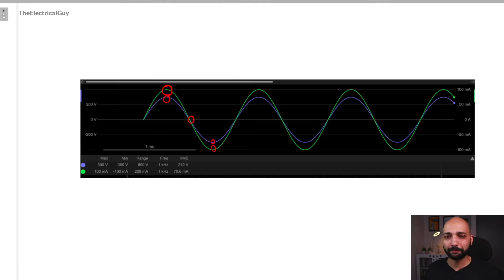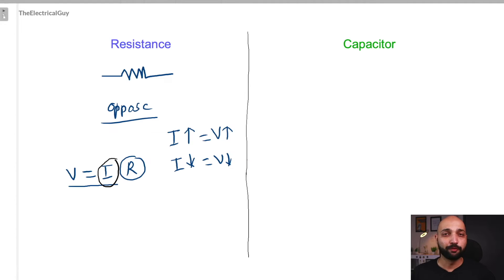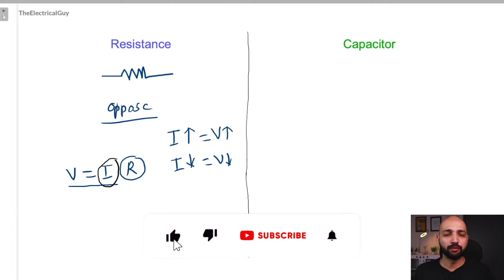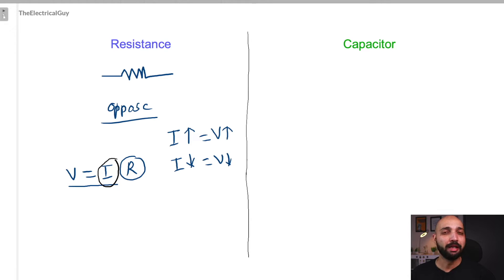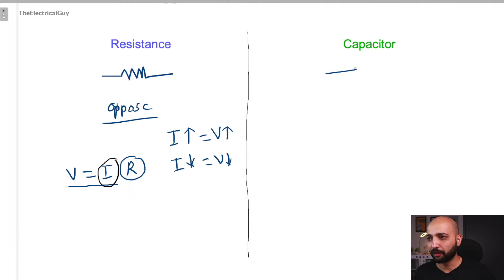Now let us understand the capacitor. Capacitors do not behave the same as resistors — their behavior is totally different. In case of a resistor, it simply opposes the flow of current. In case of a capacitor, the capacitor is absolutely okay with current.